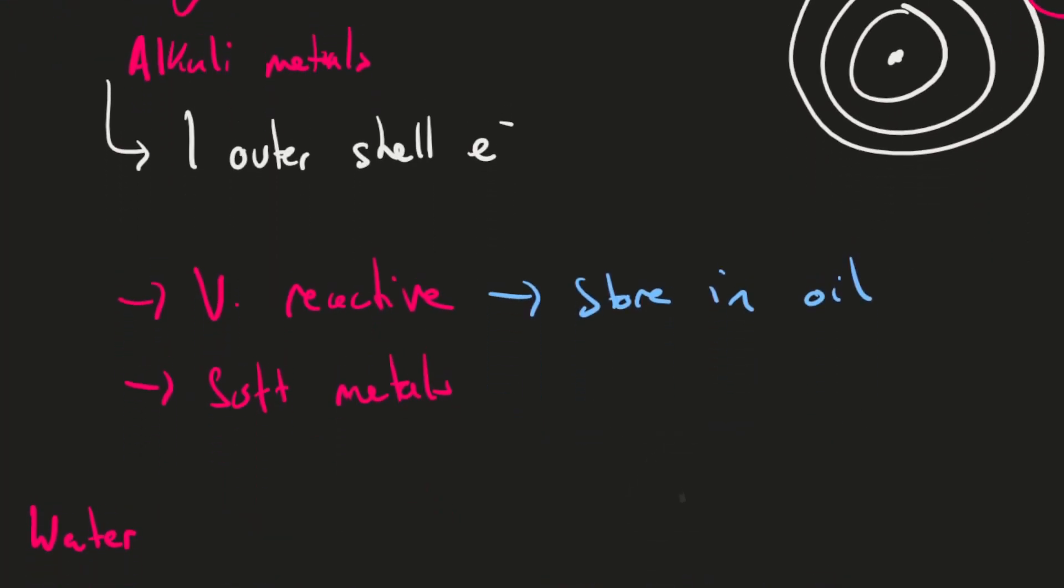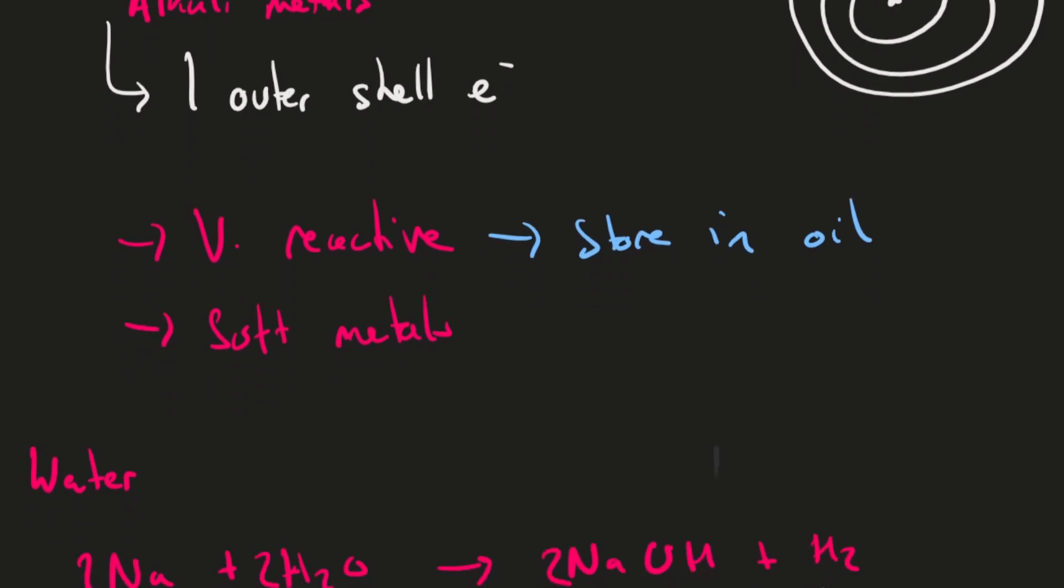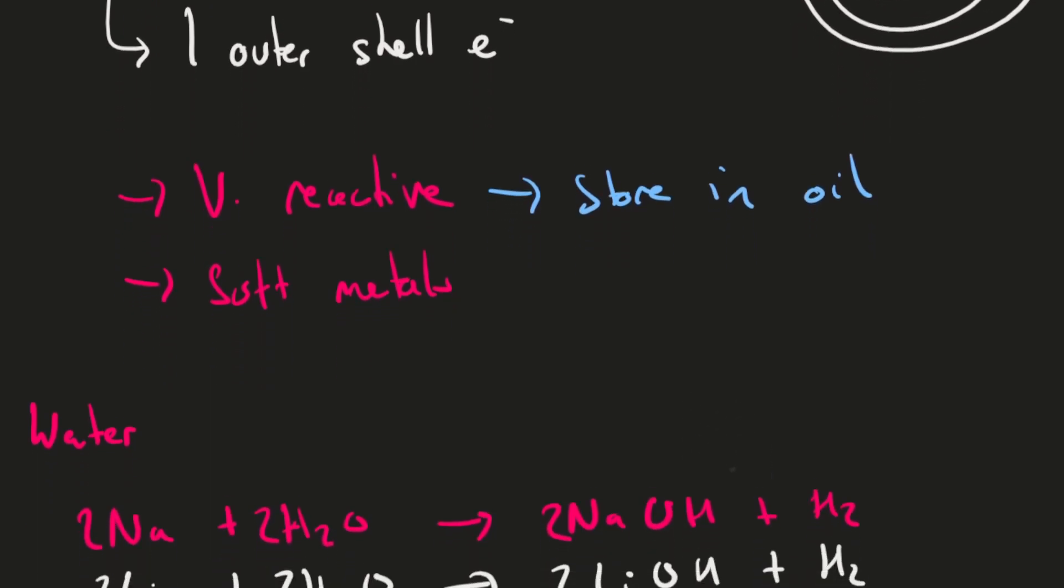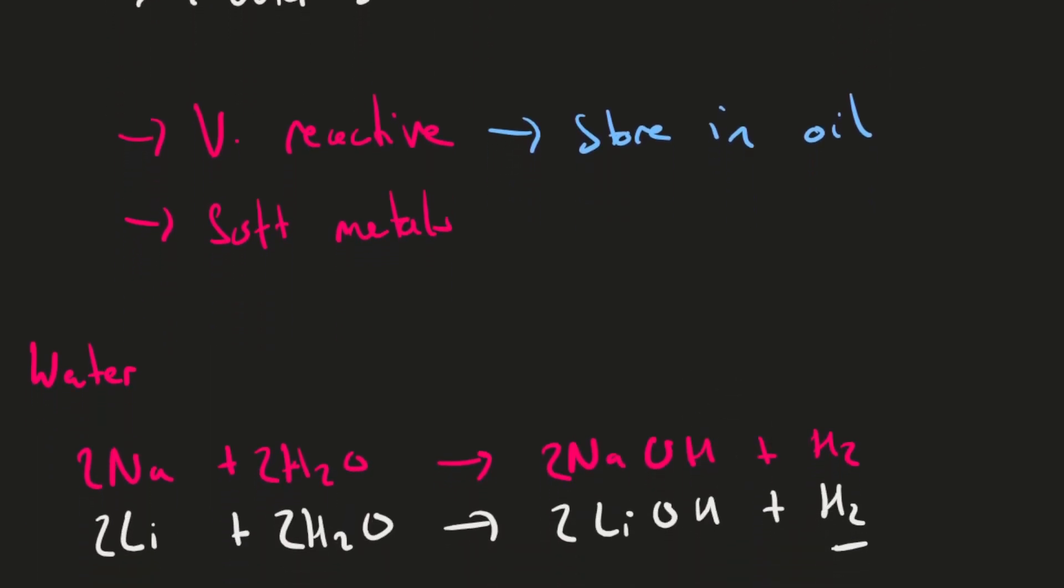Now we need to be aware of a few common reactions. First is water - all Group 1 elements react with water in the same way. Sodium plus water gives you sodium hydroxide and hydrogen. Lithium plus water gives you lithium hydroxide plus hydrogen. You always form a hydroxide and you always form hydrogen gas, so when you do this reaction with water you always see bubbling - that's the hydrogen gas.